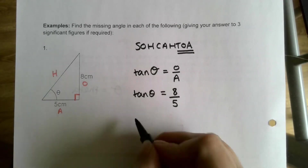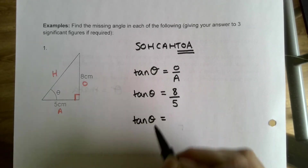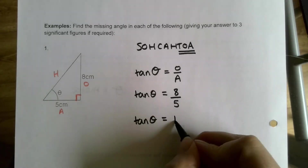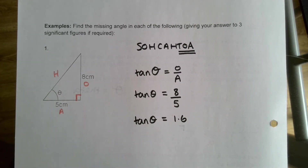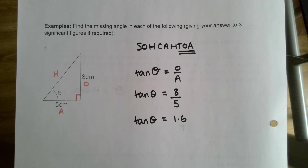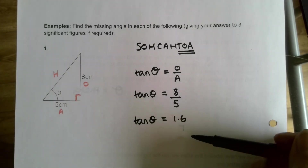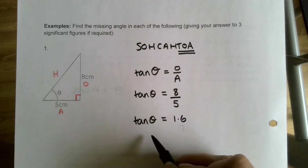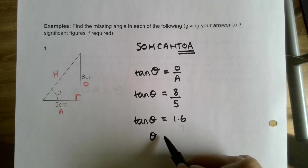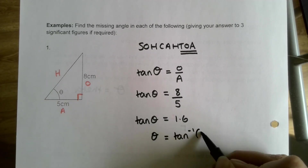8 divided by 5 gives us 1.6, so tan θ = 1.6. Now, just like in algebra where you do the opposite operation to find the unknown - for example if 2x = 8, you divide by 2 - the same idea applies here. The opposite of taking tan of something is tan to the minus 1. So the next line is: θ = tan⁻¹(1.6).